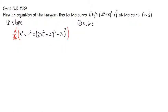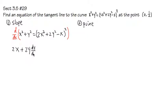Alright, let's go through this. Derivative of x squared will give you 2x. And you add the derivative of y squared, which is 2y, and you multiply by the derivative of y, which is dy/dx.